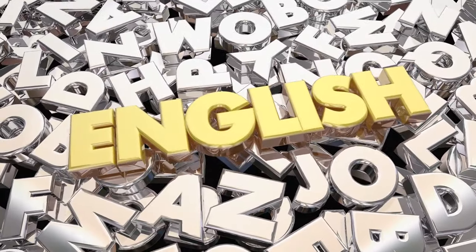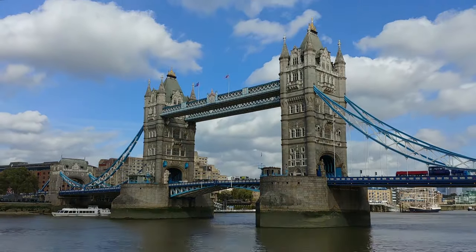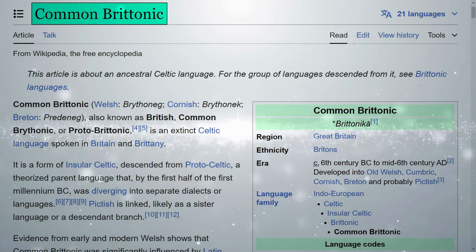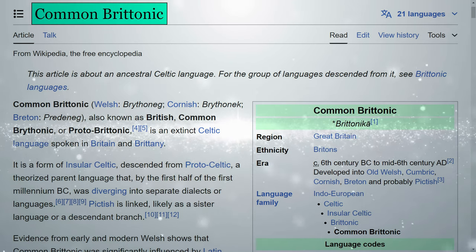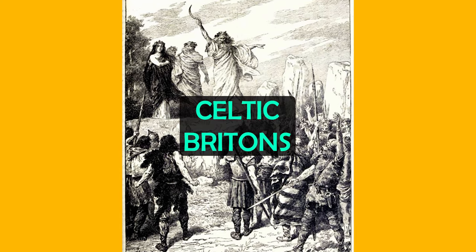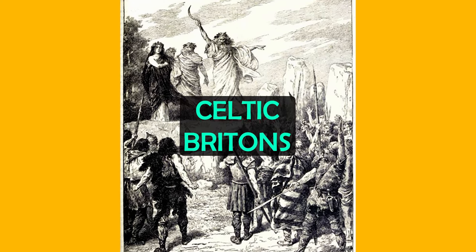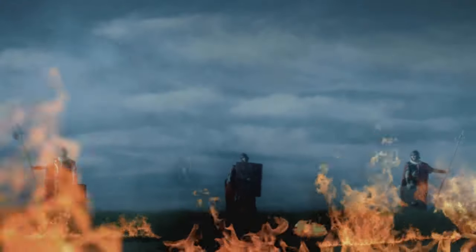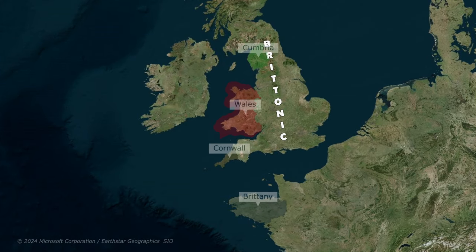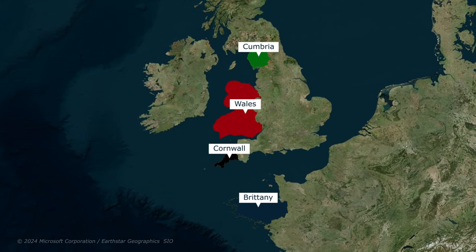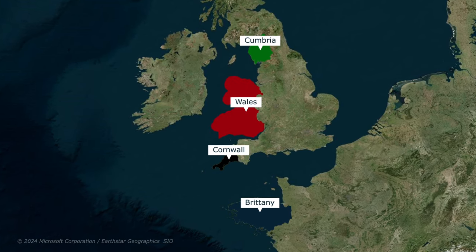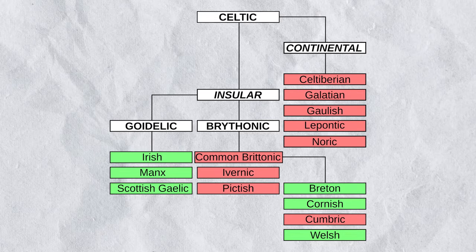There were two main languages spoken in the land we call England today. The first was a Celtic language — specifically Common Brythonic — with different regions probably speaking slightly different variations. This was the language of the Celtic Britons of Ancient England prior to the Roman invasion, which began in earnest in 43 AD. Common Brythonic is an insular Celtic language and an ancient ancestor of languages such as Welsh, Cumbric, Cornish, and Breton in Brittany. The ancient Pictish language was also potentially a related sister language to Brythonic.